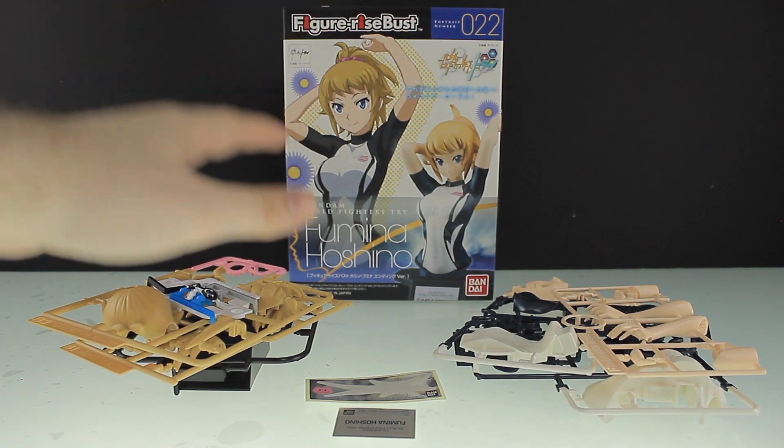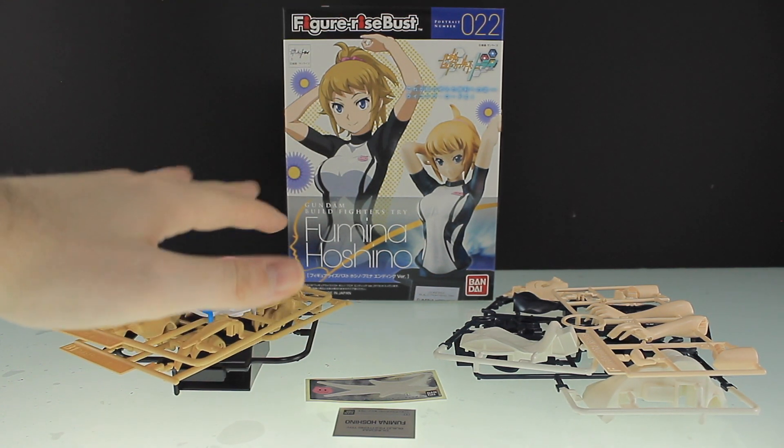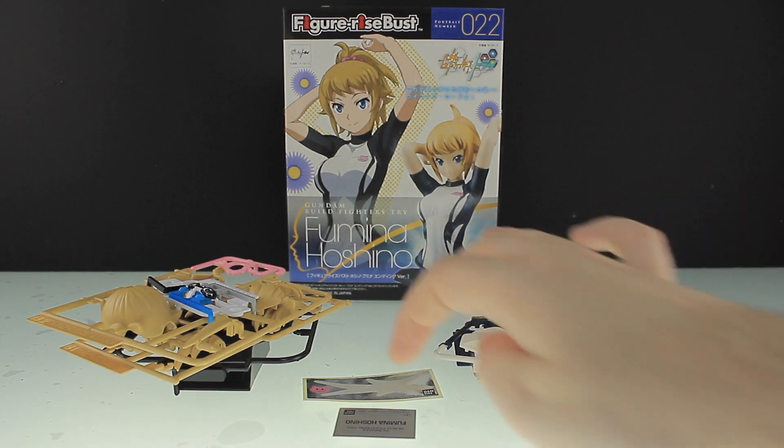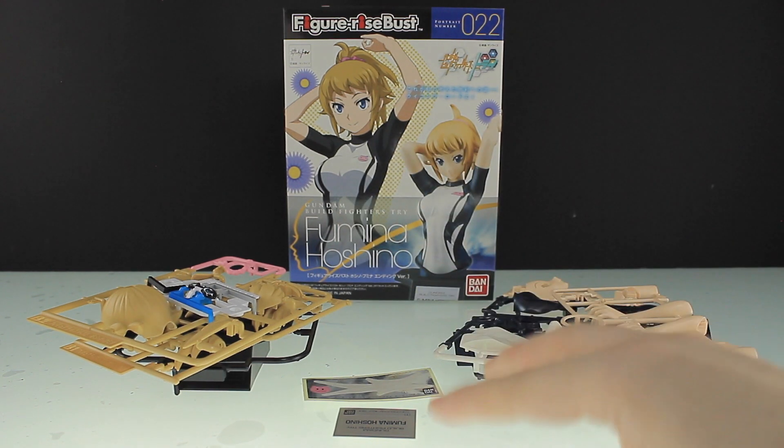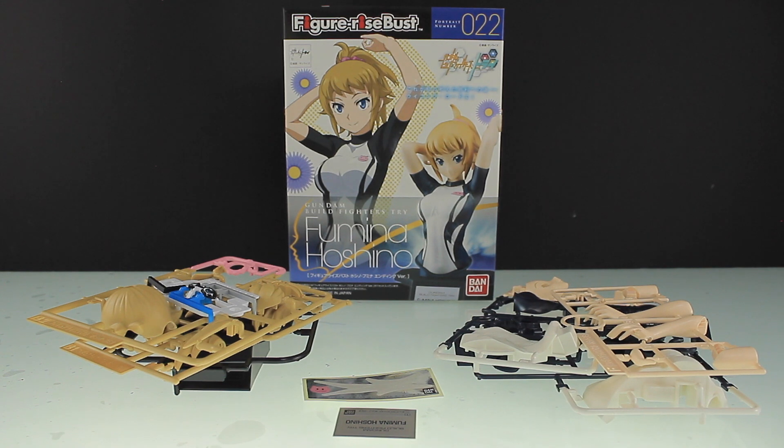So finally there is the entire contents of this box. So that is four old runners from the previous kit, three brand new runners for this kit right here, as well as two sets of stickers. Anyway, that is it for the unboxing, thank you very much for watching. And as always, make sure to come back for more Gunpla unboxings and reviews, and I'll see you next time.